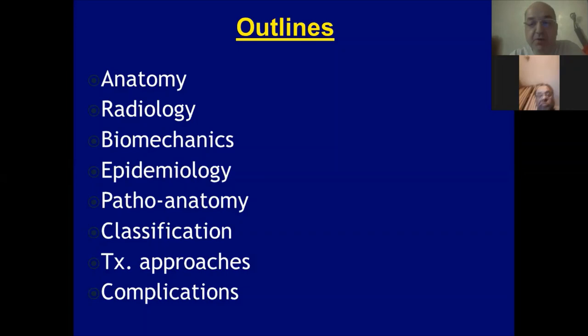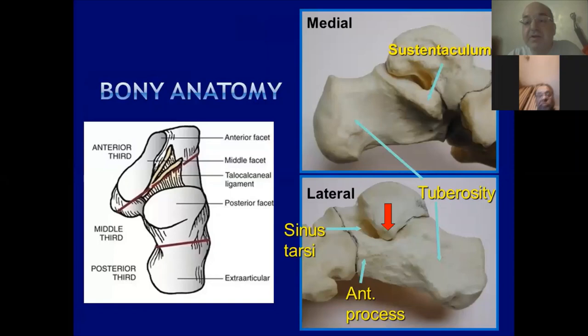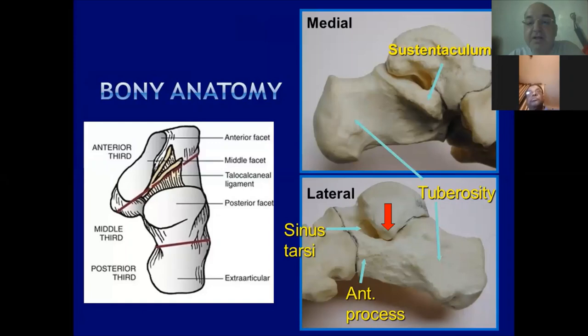The first important thing is the anatomy — the bony anatomy of the calcaneus. The calcaneus is a three-dimensional structure like the hip bone or the pelvis. It has an outer surface, the lateral aspect, and the medial surface.